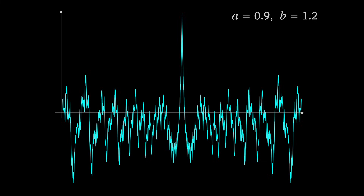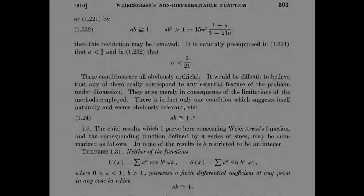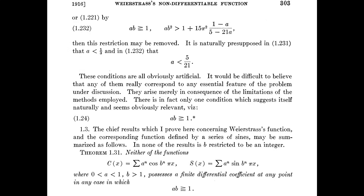G. H. Hardy pointed out this requirement of ab > 1 with a strictly less than 1 as being the natural conditions, in his work on the Weierstrass function in 1916. The full proof that the Weierstrass function is nowhere differentiable is much more involved, and others have already done really good explainers. I'll leave links to videos that go through it in the video description.